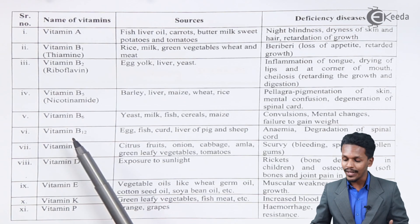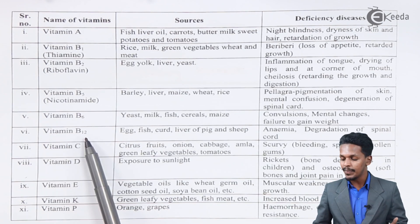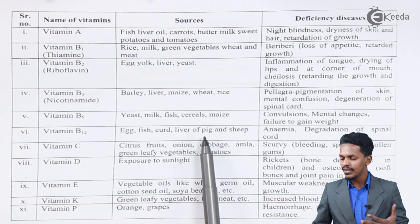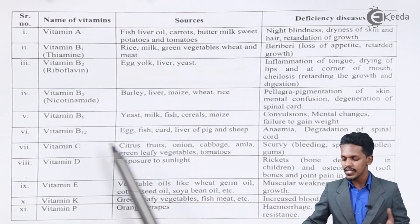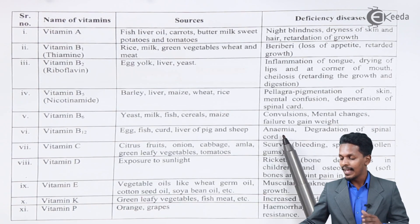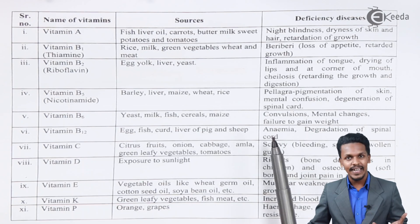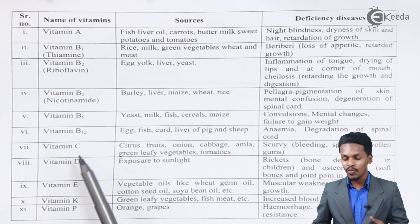Talking about Vitamin B12, its sources are egg, fish, curd, liver of pig, and shrimp. The deficiency diseases it can cause are anemia and degradation of the spinal cord, if it is present in insufficient quantity in our body.